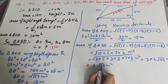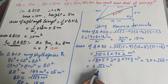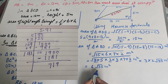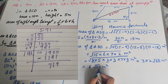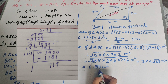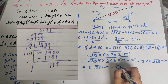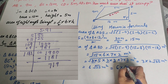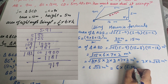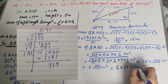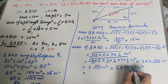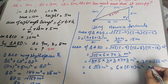Now we find the value of square root of 35 using the long division method. Square root of 35 equals approximately 5.91. So the area of triangle ABD equals 6 × 5.91 square meters, which equals 35.46 square meters, approximately 35.5 square meters.